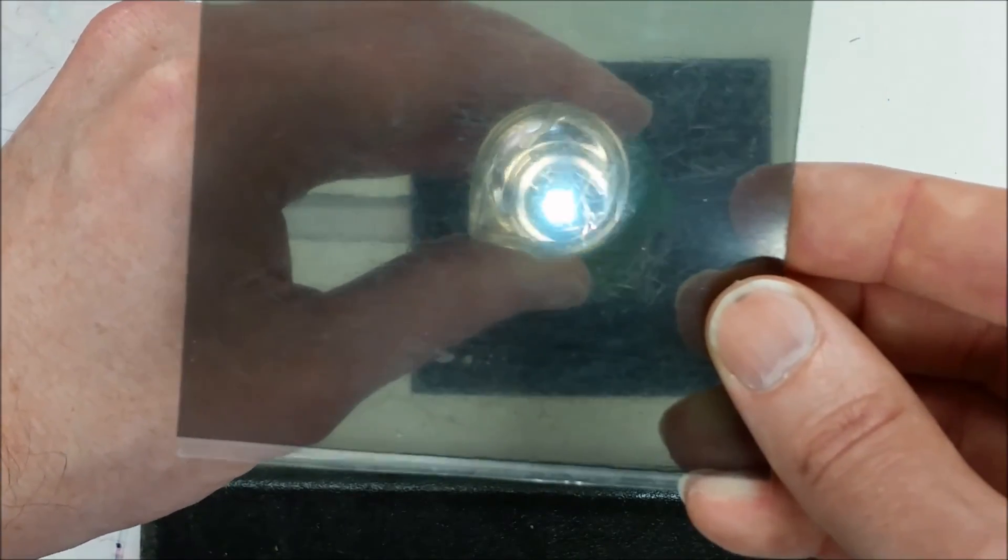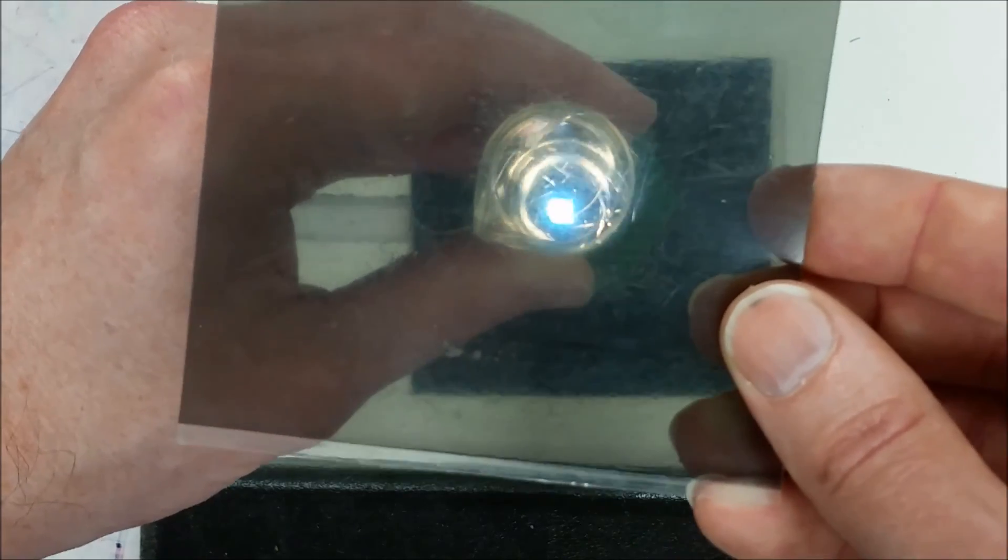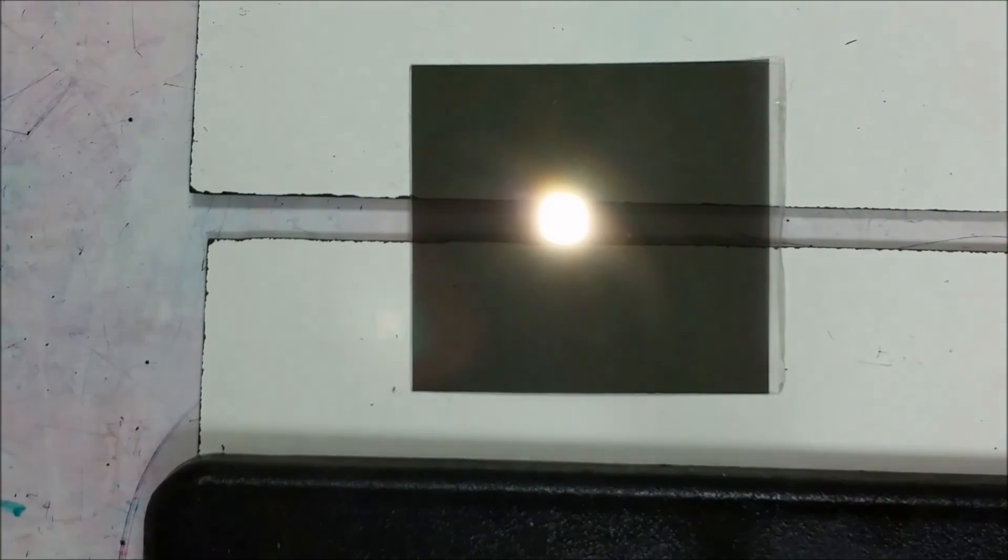And so that's how a polarimeter works, is it's able to measure the amount of an optically active solution by how much the plane of polarization needs to change to get to a minimum, back to a minimum, between the two polarizing filters, compared to when there's no sample present.